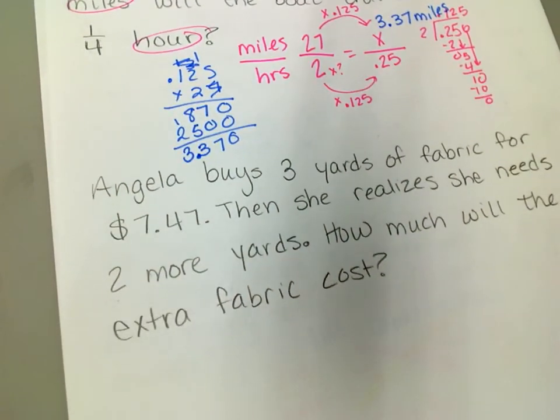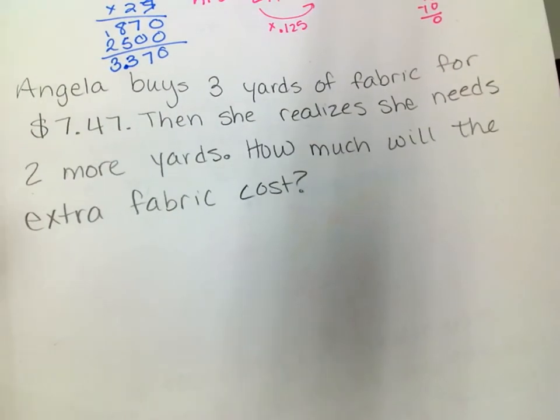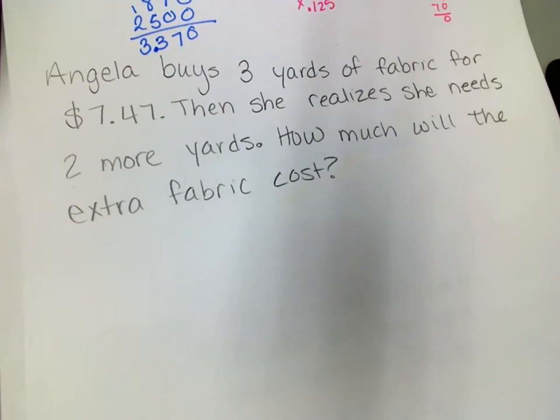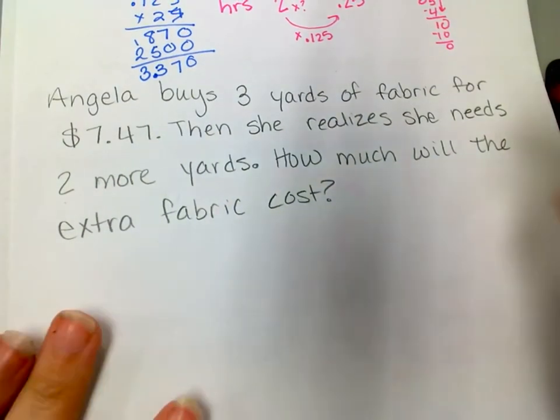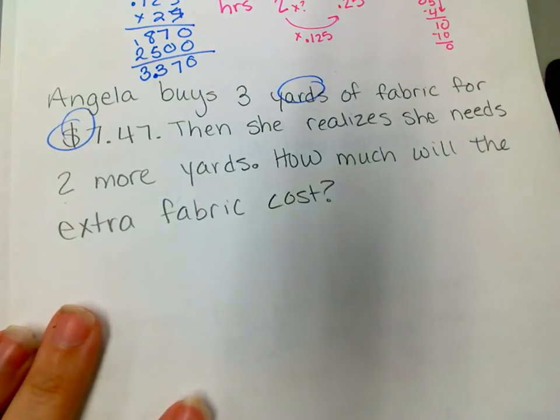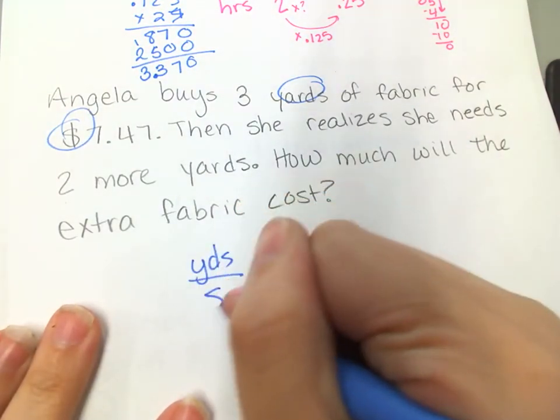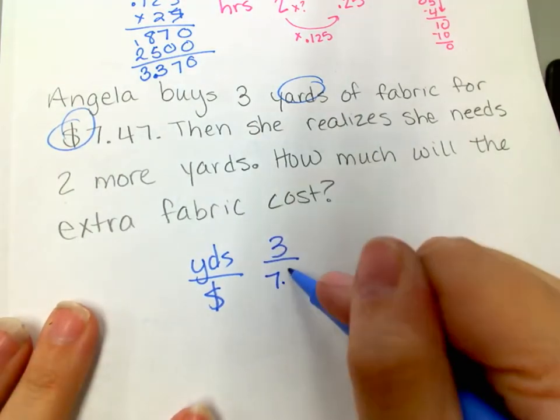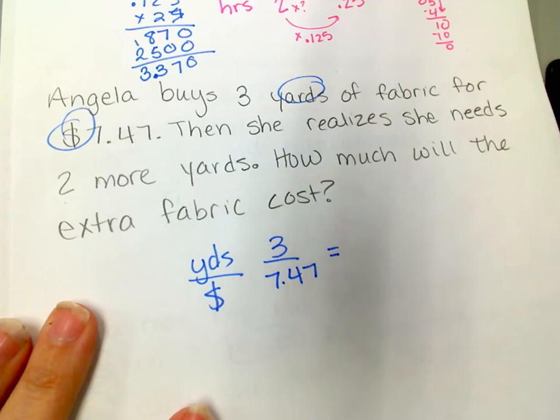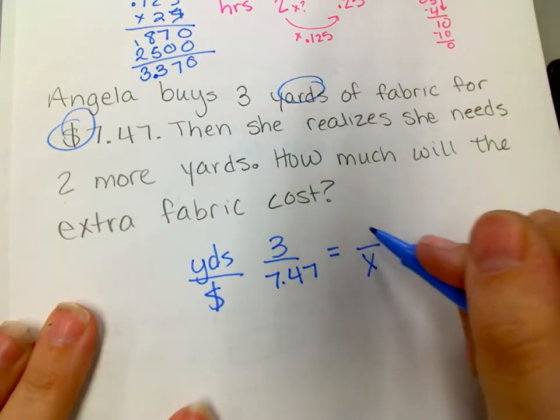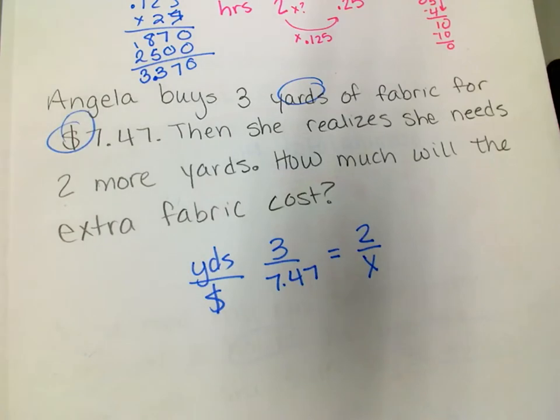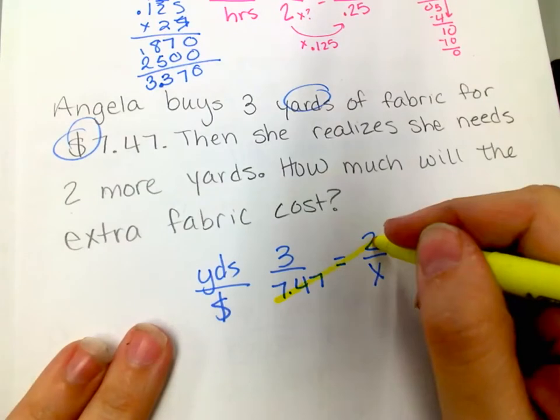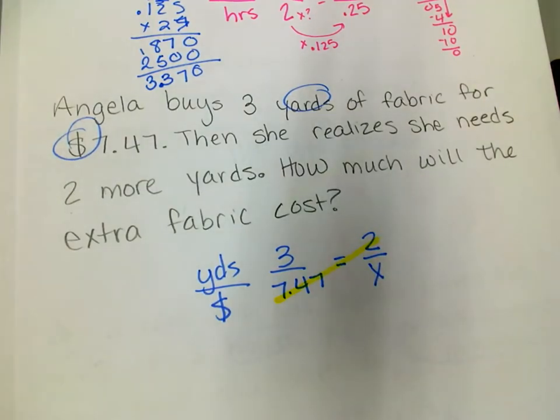Alright, one more, that's the last one I promise. Okay. All right, Angela buys 3 yards of fabric for $7.47, then she realizes she needs 2 more yards. How much will the extra fabric cost? So I'm talking about yards and dinero. So yards and money. So if I have 3 yards is $7.47, then I want to know how much money is it going to cost for 2 yards. This is a great cross product one. I can just multiply and multiply.